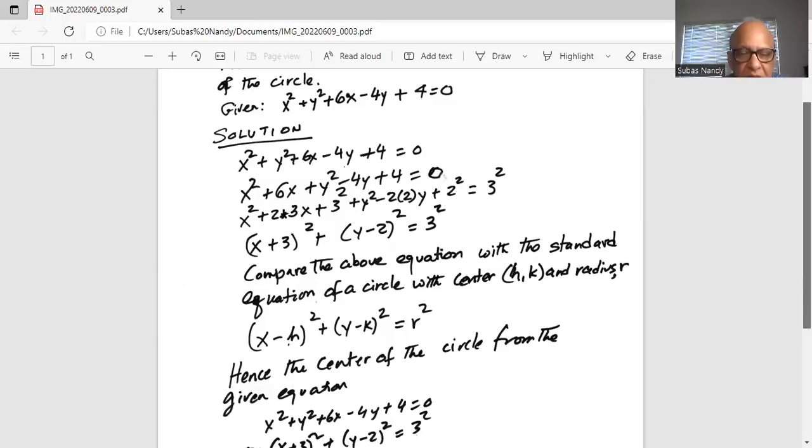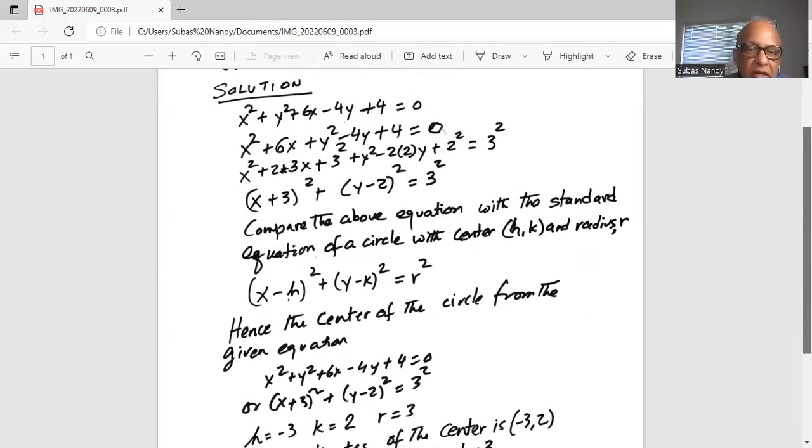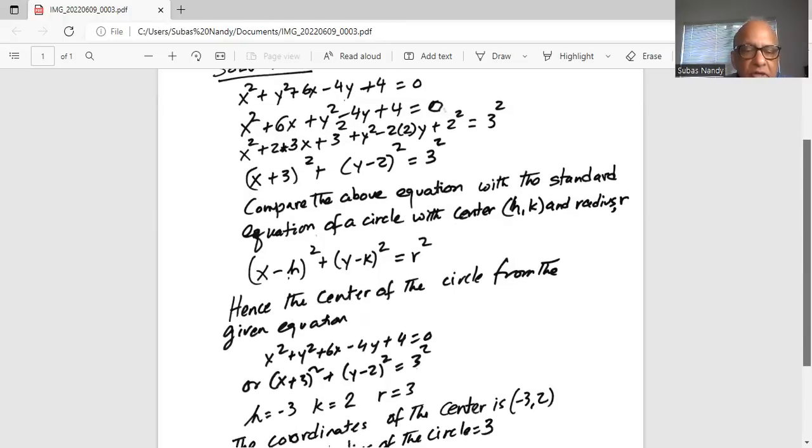So the center of the circle, the coordinates are h and k and the radius of the circle is r. Comparing our final expression x plus 3 square plus y minus 2 square equal to 3 square, the h in our case is minus 3.